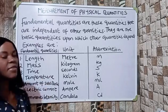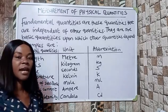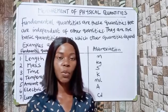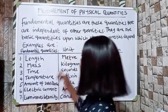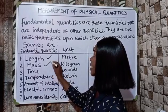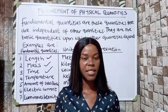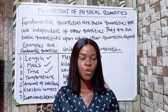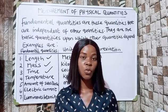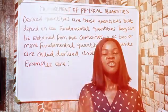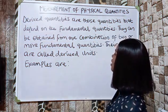Despite having seven fundamental quantities, there are three that are very important: length, mass, and time. They are important because we are going to use them to determine the dimension of other physical quantities.